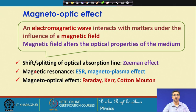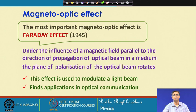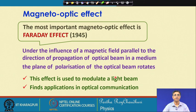Related phenomena include magnetic resonance, ESR, and magneto-plasma effects. The magneto-optical effect we will primarily be concerned with is the Faraday effect, which was discovered in 1845. Under the influence of a magnetic field parallel to the direction of propagation of an optical beam in a medium, the plane of polarization of the optical beam rotates. This effect is used to modulate light beams and finds applications in optical communication, instrumentation, and measurement of high currents.